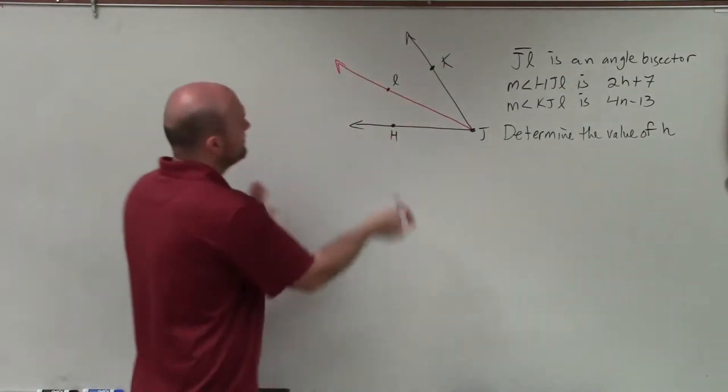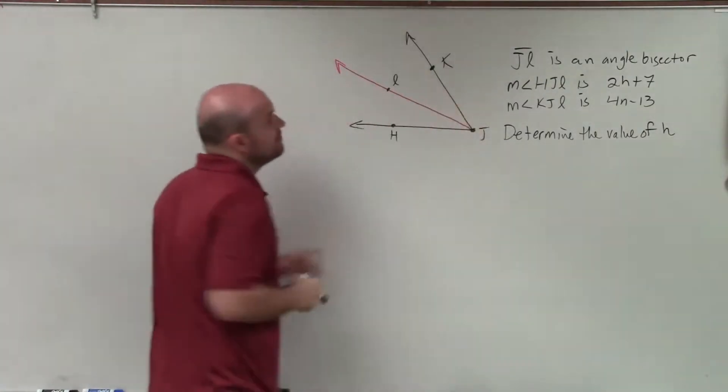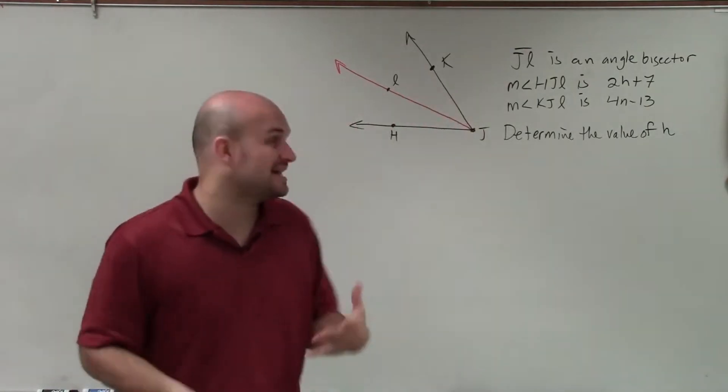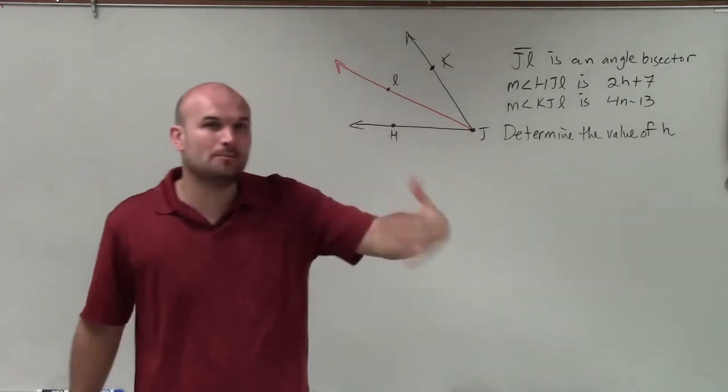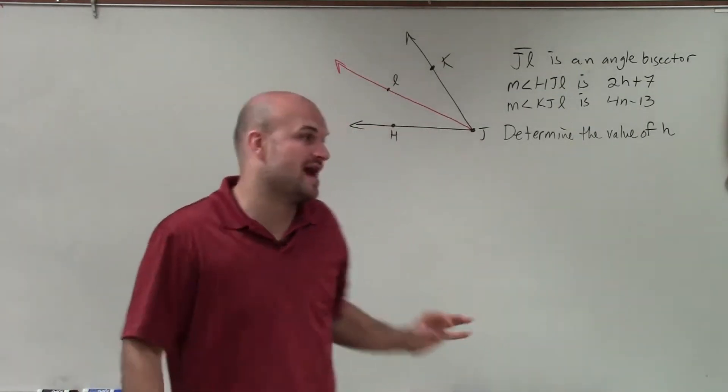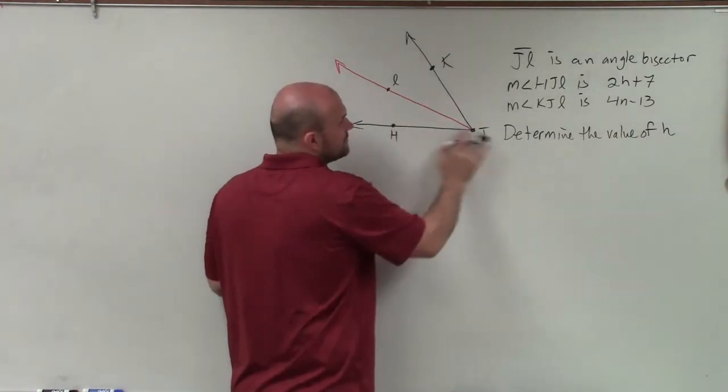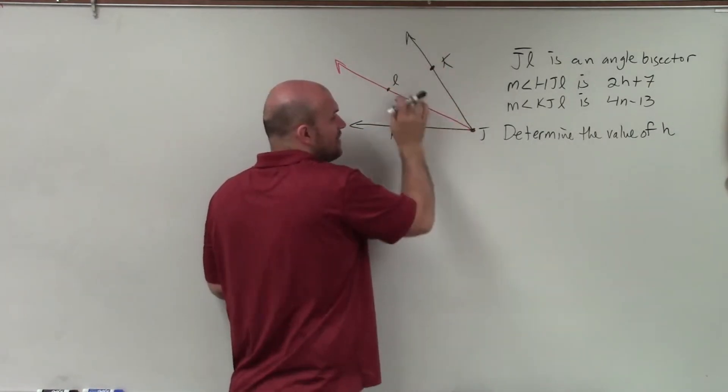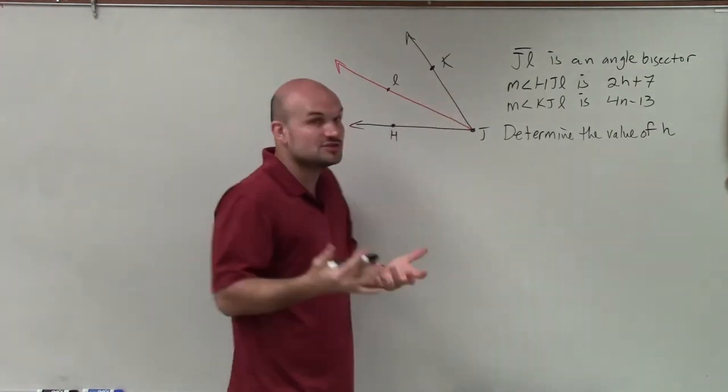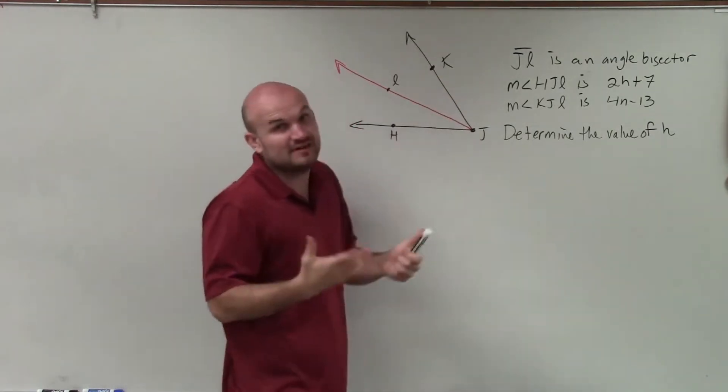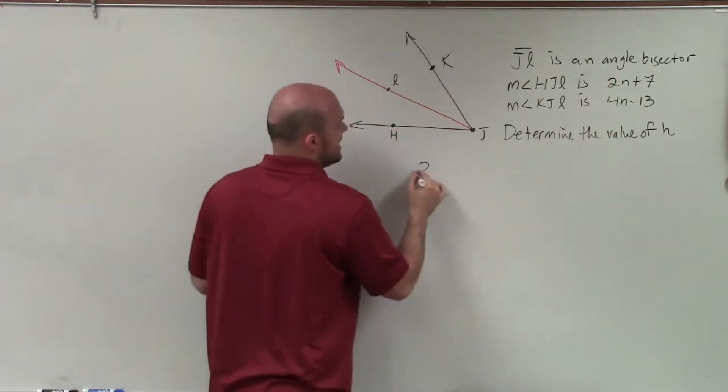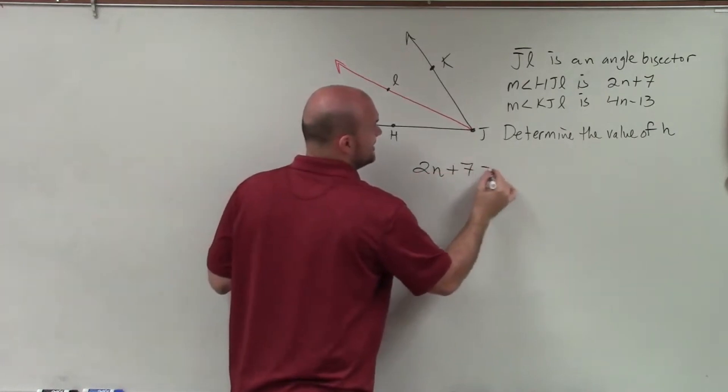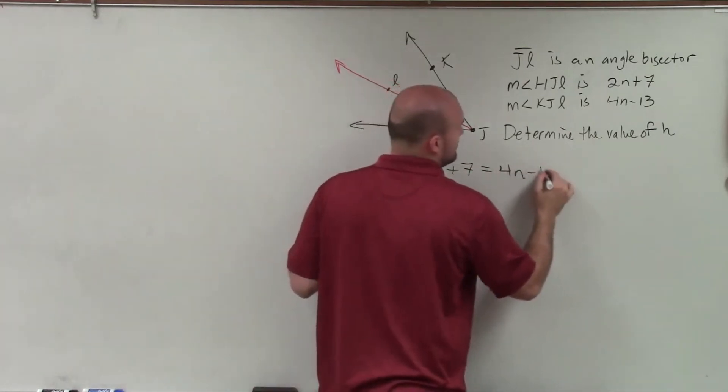Welcome. All right, so what we have is we have an angle in the black, and then what we've done is we've created an angle bisector. You can see that ray is JL. And remember, an angle bisector cuts an angle in half. It creates two congruent angles. So here I have the large angle, and then this angle bisector now cuts this into two equal angles. Therefore, since those two angles are equal based on the definition of an angle bisector, I can now say that 2n plus 7 is equal to 4n minus 13.